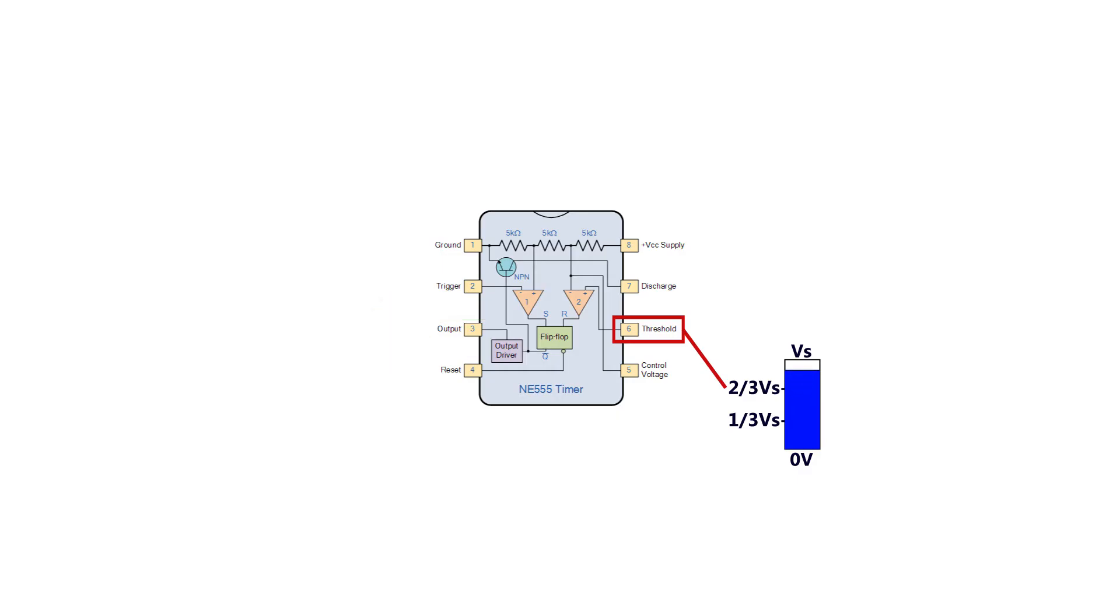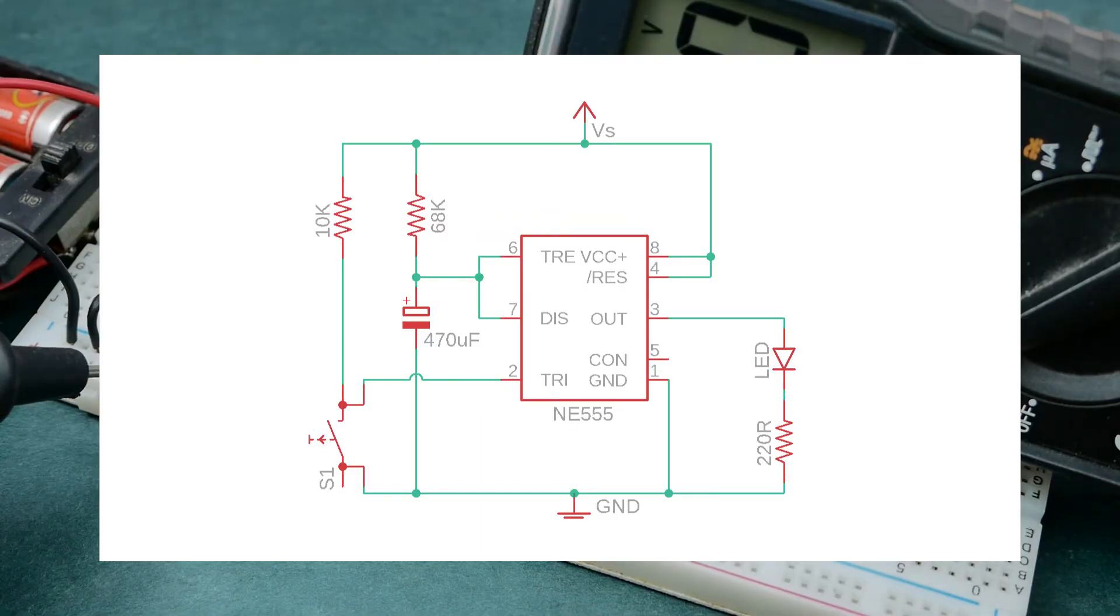And whenever the output of the 555 timer IC is in OFF state, the discharge pin, pin 7 acts as a ground or negative rail which means that it is internally connected to 0V. Using these three fundamentals, let's try to understand how this circuit works.